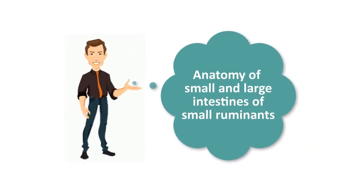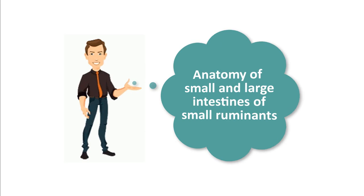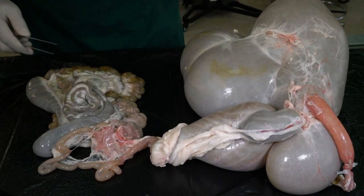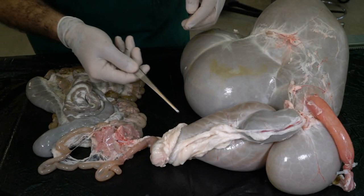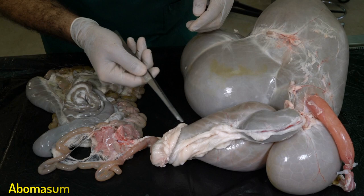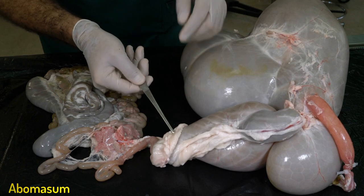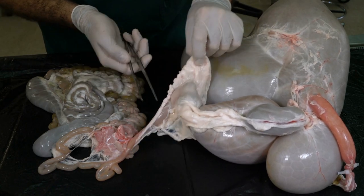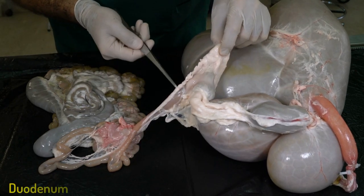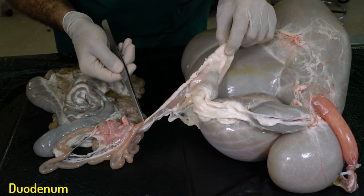Hello everyone and welcome back to another anatomy tutorial where we are going to be talking about the small and large intestine of the sheep or small ruminants. In a previous video we talked about the stomach and now we will continue after the abomasum. As you can see here we can find the first section of the small intestine.